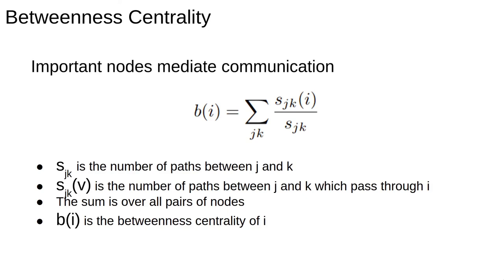In practice this means we have to calculate all possible shortest paths in the network which can be very computationally demanding. There are some ways to make this efficient but calculating betweenness centrality for a large network can take a long time.